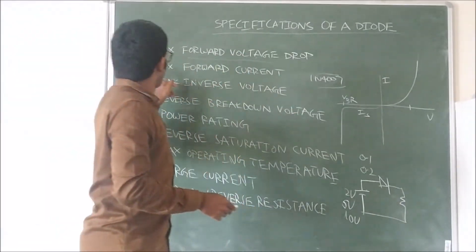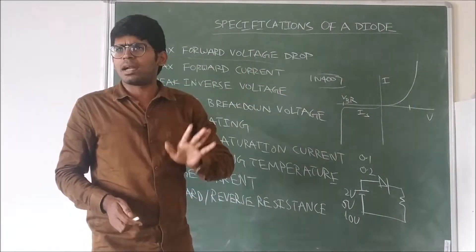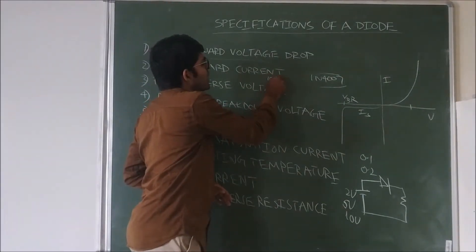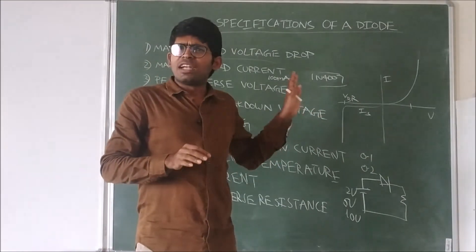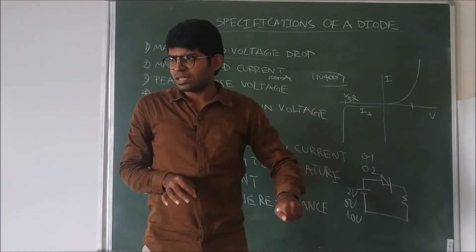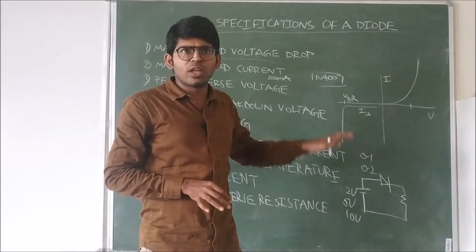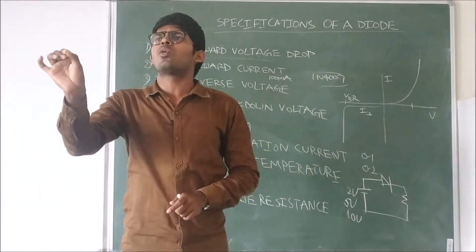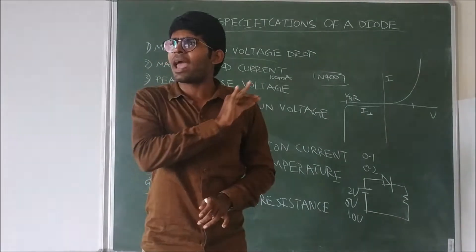Next — what is this maximum forward current? It is the maximum current. For example, if the maximum forward current is 100 milliamperes, so the diode when it is in the state of conducting — when it is connected in forward bias — the maximum current we can observe in the diode is 100 milliamperes. You cannot observe 101 milliamperes. It is the maximum current.